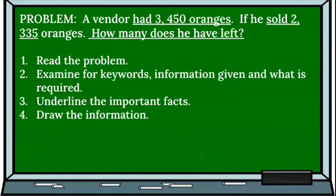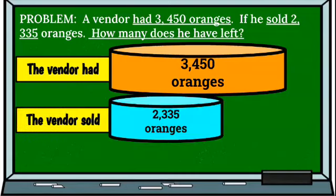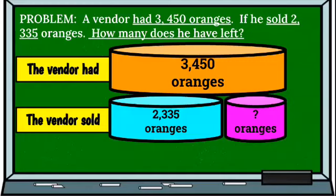Then we're going to draw the information. So here we have our first part of our information: the vendor had this number of oranges he started with. Then here we have how many oranges he sold from the amount that he started with. And here we are to find out how many oranges he has left.